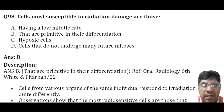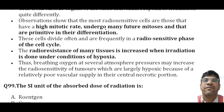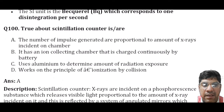Cells that are most susceptible to radiation damage are those that are primitive in their differentiation. The SI unit for absorbed dose is the Gray. The scintillation counter works on the principle that the number of impulses generated is directly proportional to the amount of x-ray radiation incident on the scintillation material.